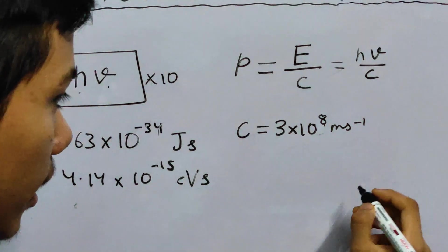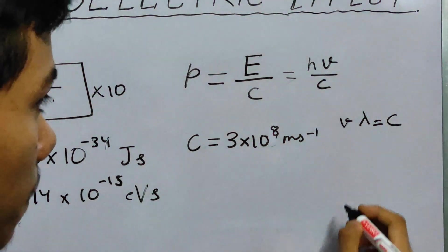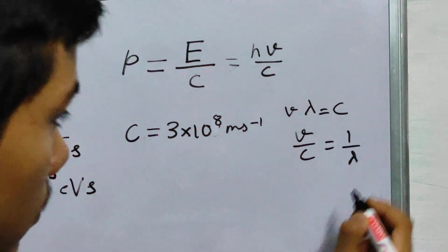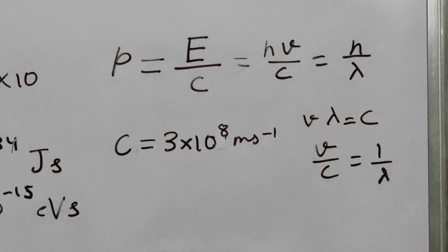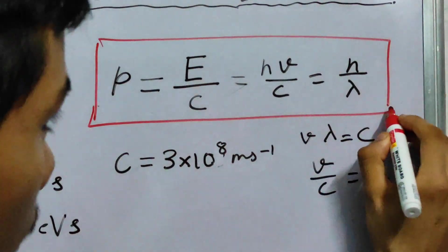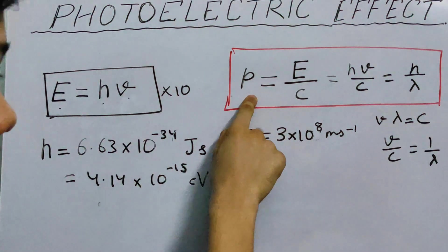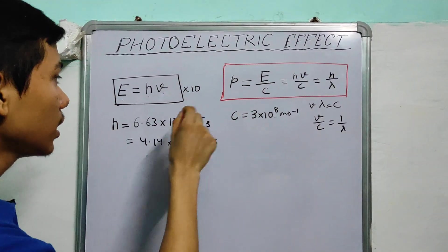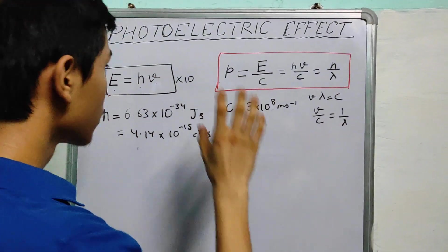We know an equation that the frequency times the wavelength is the speed of a wave. This is true for any wave. Which gives nu by C as 1 by lambda. Easy enough. We can say that P is H by lambda, where lambda is the wavelength of our photon. Notice the energy and the momentum both are independent of the intensity of light. The only thing that matters is the frequency. Now this is useful, you will see why it is.